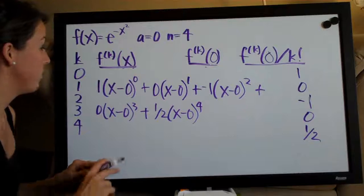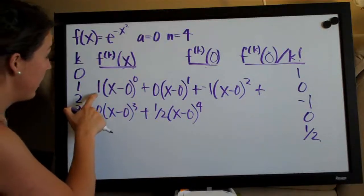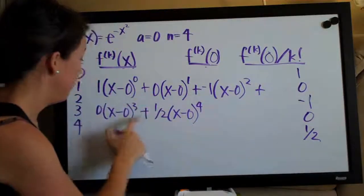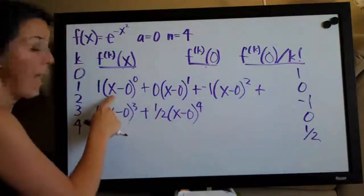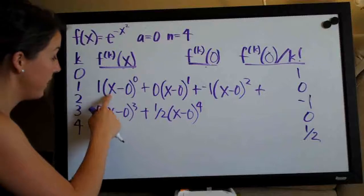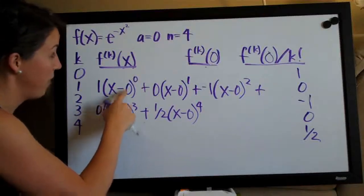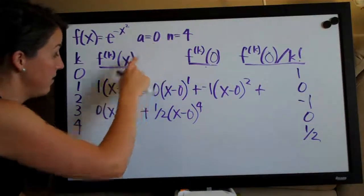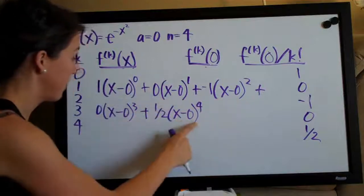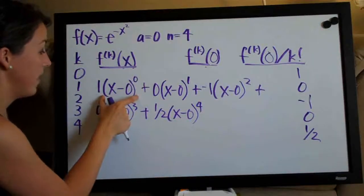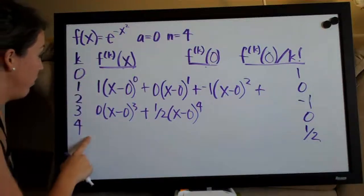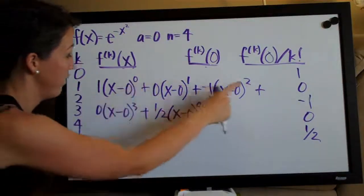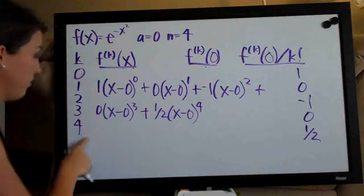All we have to do now is simplify. So, realize here that each of these coefficients, one, zero, negative one, zero, and one half are the coefficients here. X doesn't change that we always write the x. We always subtract from that whatever a is. In this case, zero. That's always the same. And then we just raise that polynomial here to whatever k is. So, you can see zero, one, two, three, four. Because we have zero, one, two, three, four there.